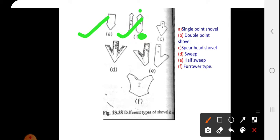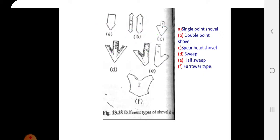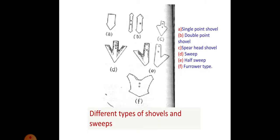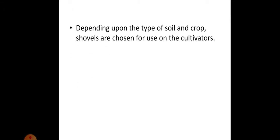The types include spear head shovel, narrow sweep, half sweep, and furrow type shovel. These are different diagrams of shovels and sweeps. Depending upon the type of soil and crop, shovels are chosen for use on the cultivators.